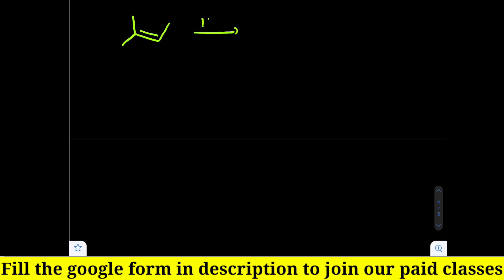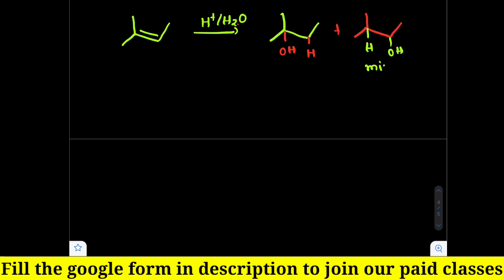For example, take this compound and add water (H+/H2O). First, write the skeletal structure as is. Then, following Markovnikov's rule: H+ adds to one olefinic carbon and OH adds to the other. The major product has OH on the carbon with fewer hydrogens (zero hydrogens), while the minor product has OH on the carbon with more hydrogens. So the major and minor products are determined by which carbon bears the negative charge.